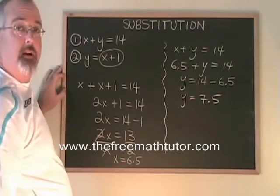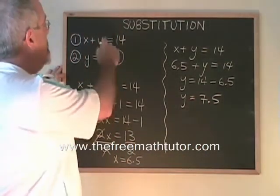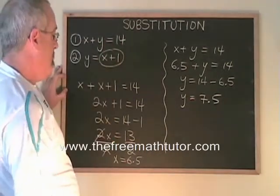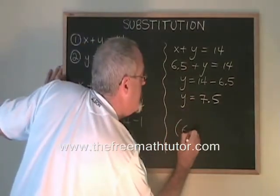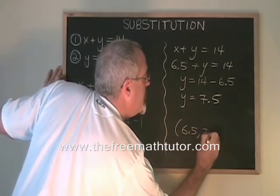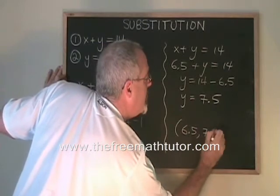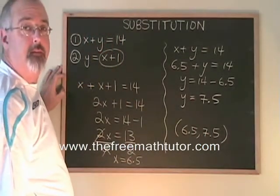We're finished. We have found the point where these two lines cross, which is going to be 6.5, 7.5. This is substitution.